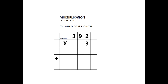In our first example, we will multiply 392 by 3. We will do 3 times 2, 3 times 9, and 3 times 3.